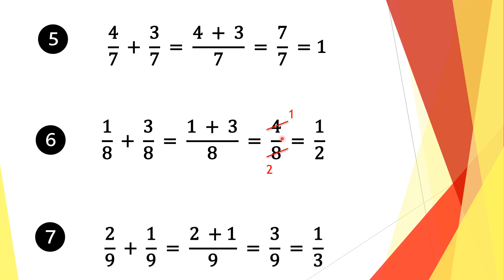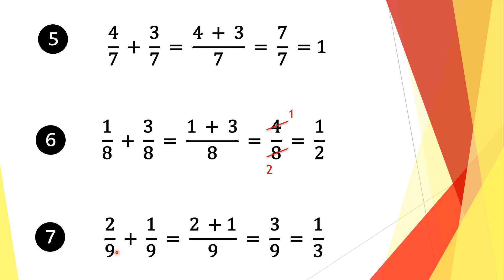Moving on to question 7. We have 2 ninths plus 1 ninth, and again we have a common denominator in both of these fractions. We take a common factor of 9. 9 divided by 9 is 1, and 1 times 2 is 2. We bring along the plus sign, then do the same for the second fraction. 9 divided by 9 is 1, and 1 times 1 is 1. We add the numerators: 2 plus 1 is 3, and we bring along the denominator 9. Now top and bottom are divisible by 3: 3 divided by 3 is 1 and 9 divided by 3 is 3. So our solution is 1 third.